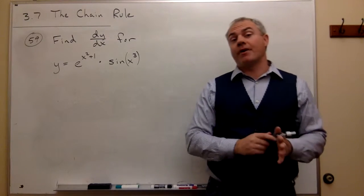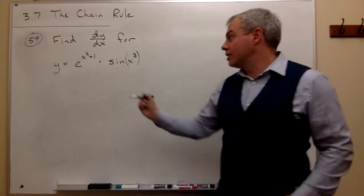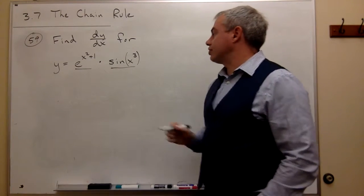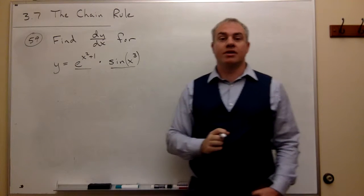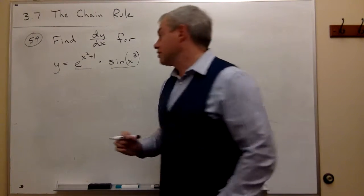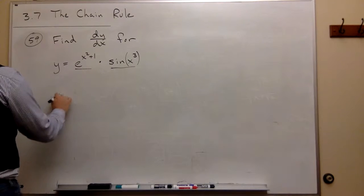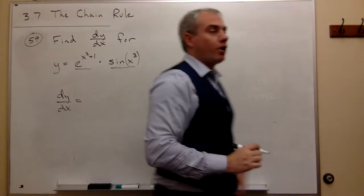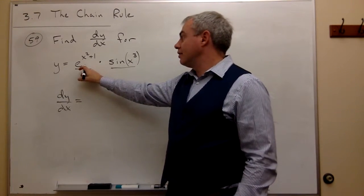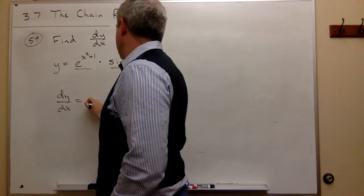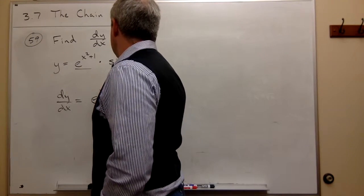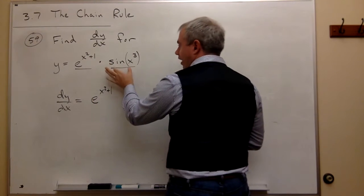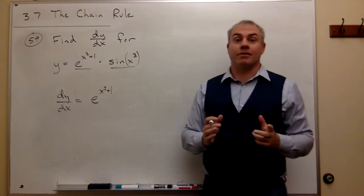So I know right off the bat I'm using the product rule. I have a first function, e raised to the x squared plus 1, and a second function, sine of x cubed, and I need to use the product rule to take the derivative. So I get dy/dx. The way I use the product rule is I take the first function and leave it alone — I just write down e to the x squared plus 1, then multiply that by the derivative of the second. Now the chain rule comes into play.